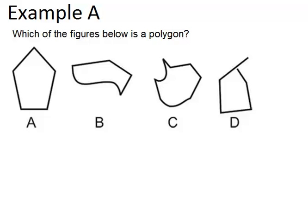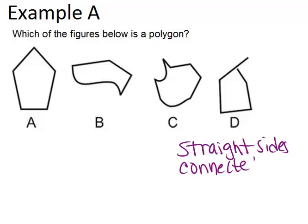So, to be a polygon, it has to have straight sides, and also, all of the sides have to be connected, so there can't be any gaps.